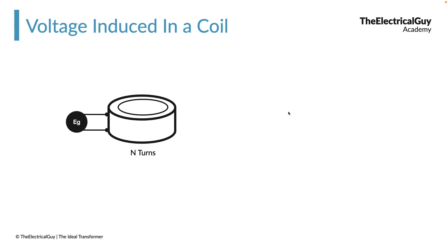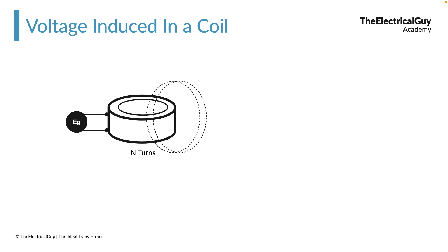Now let's take the same coil, but this time we have connected an alternating voltage source to it. The coil has N number of turns. The moment we switch on the supply, current starts flowing through the coil, a flux is induced, and because the flux is induced, a voltage will be induced across the terminal of the coil based on Faraday's law. The value of that voltage e is given by: e = 4.44 × f × N × φmax.